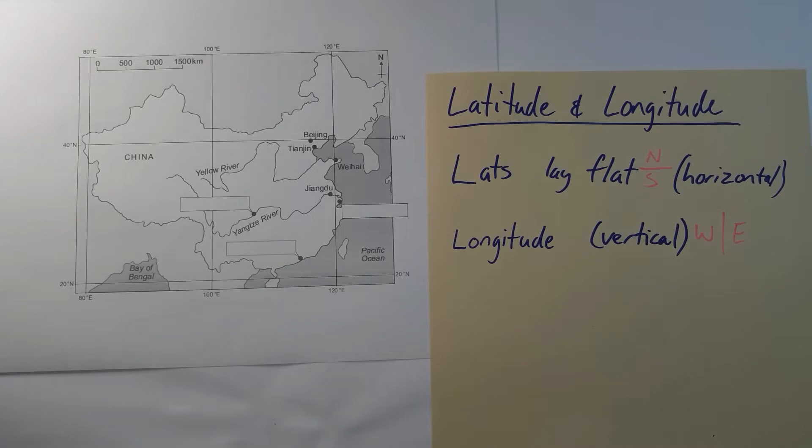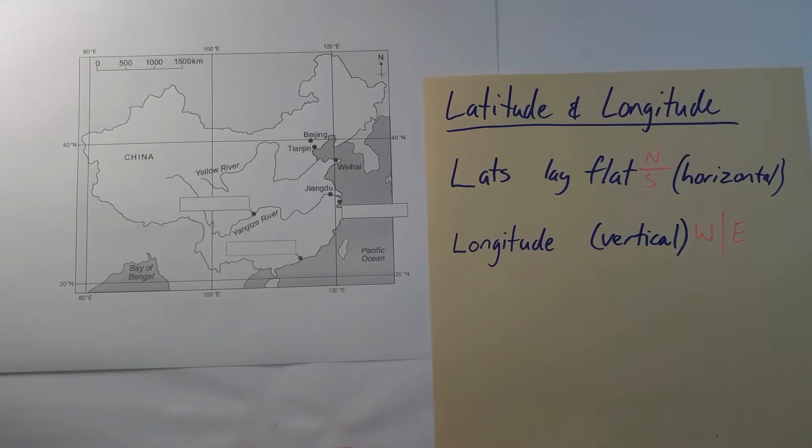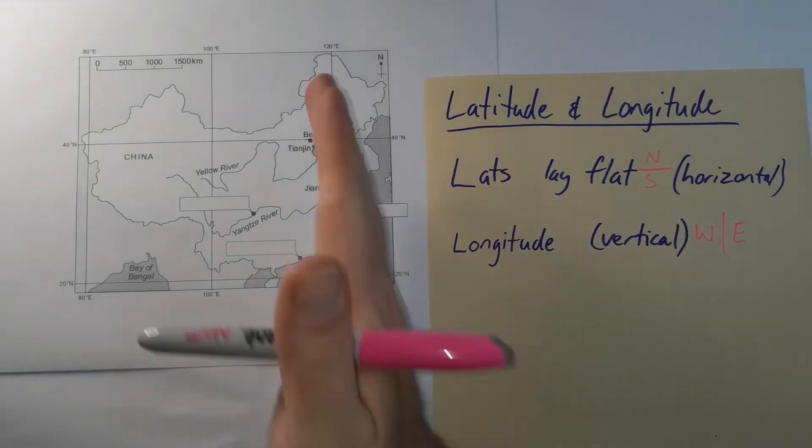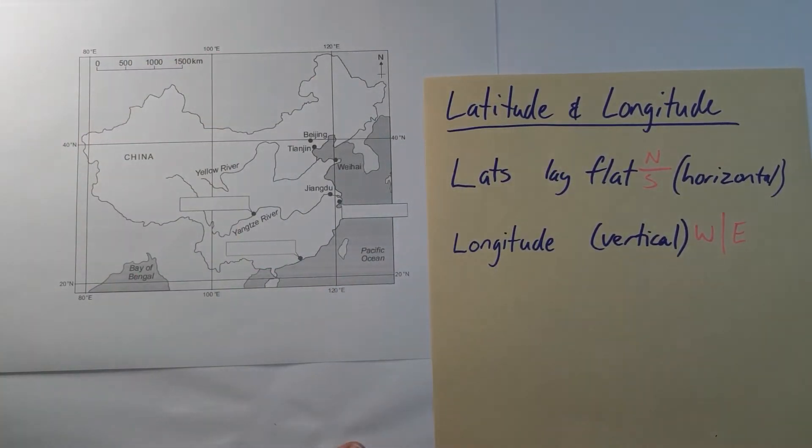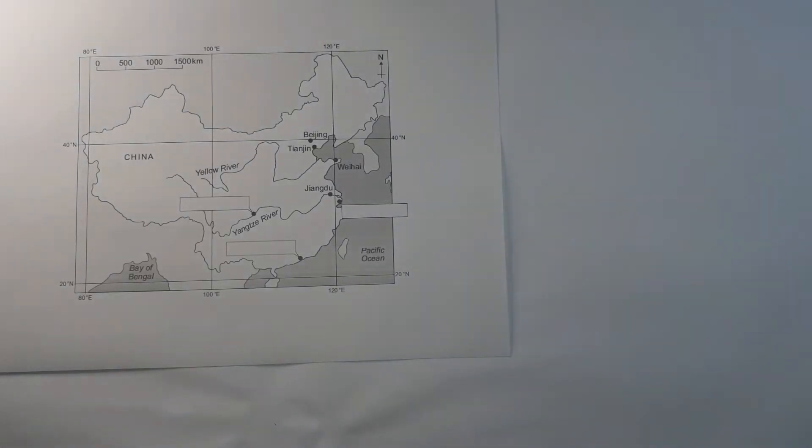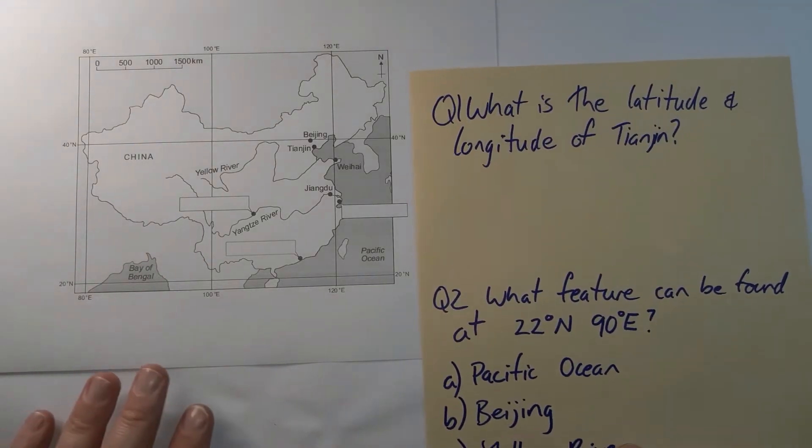So we need to find first of all, depending on what the question is asking us, the latitude using the horizontal lines and then the longitude using the values and lines which are vertical. So let's have a look at two possible exam style questions and these are our basic style latitude longitude questions.